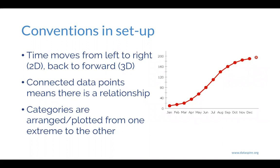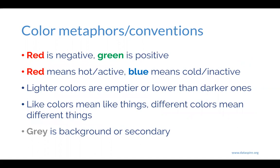Some conventions about setup: we presume time moves from left to right in two-dimensional space, or from back to foreground in three-dimensional space. We use language like 'back in time' or 'forward into the future.' When data points are connected, we presume that has meaning and that categories are arranged from one extreme to the other — we as viewers presume that, whether or not the designer actually did it.